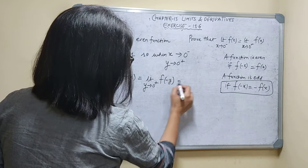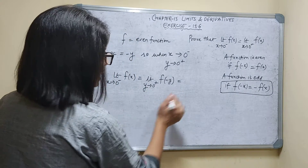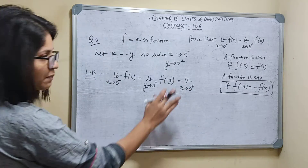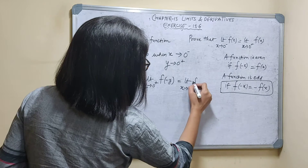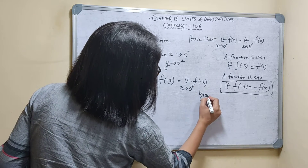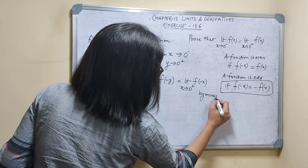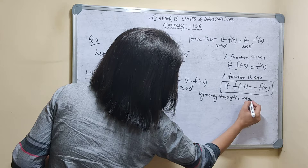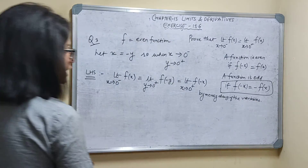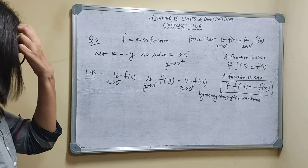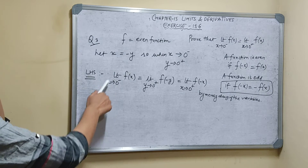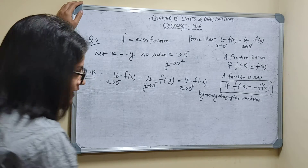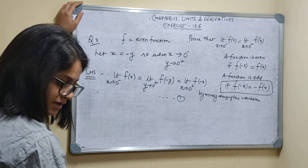Now you can change the variable — at the place of y, I can write x. So I can write: limit as x tends to 0 plus of f(minus x). By merely changing the variable, we get: limit x tends to 0 minus of f(x) is equal to limit x tends to 0 plus of f(minus x). Call this equation number 1.